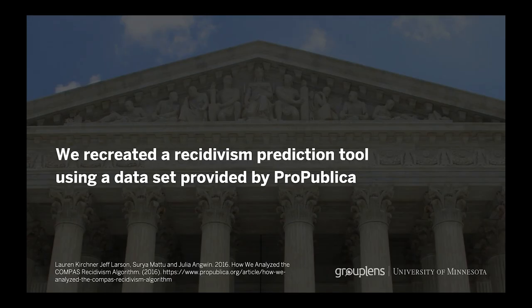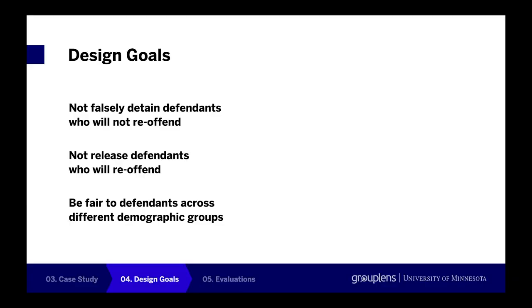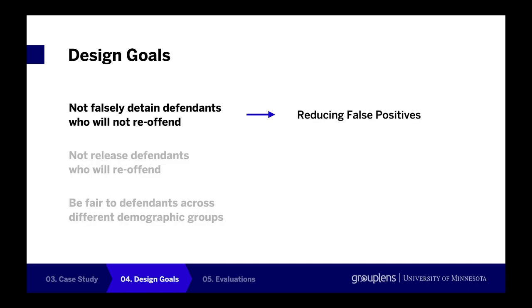To demonstrate our concept, we applied and evaluated our approach with a case study in the context of recidivism prediction. We recreated the prediction tool using a dataset from 2016. Based on previous literature on unfairness, we identified three design goals that guided our process to capture the inherent trade-offs in the algorithm. The first design goal is not falsely detaining defendants who will not re-offend, since it is unfair to the defendants. This design goal corresponds to reducing false positives in the system criteria.